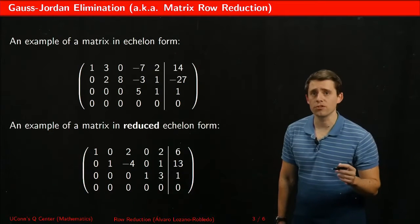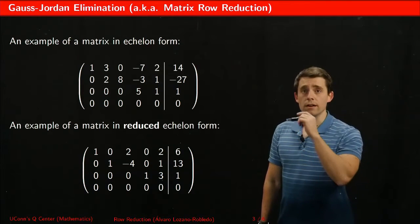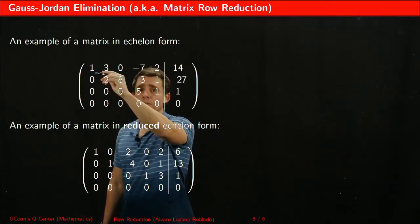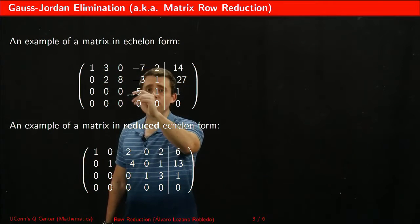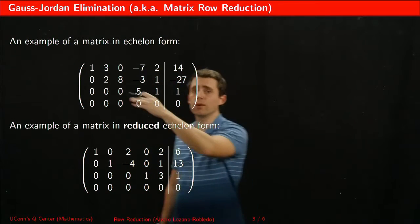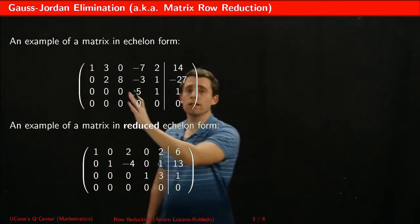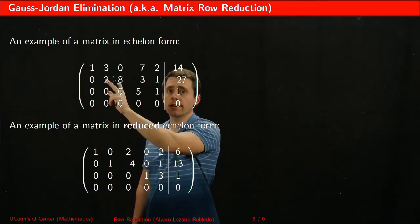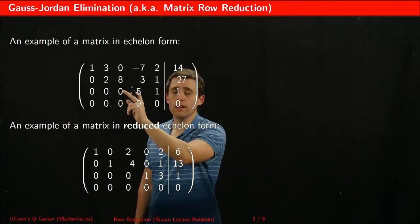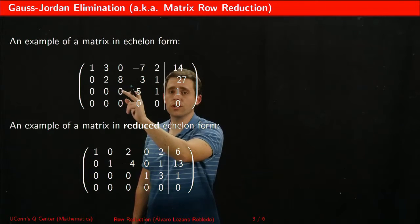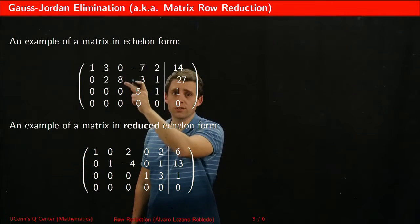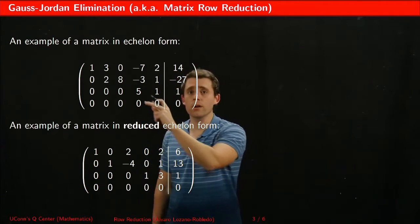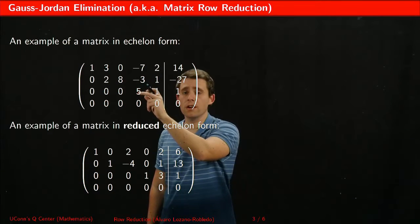Here are two examples of matrices in echelon form. Echelon form means there is a staircase pattern, with zeros in the lower left corner. Once there is a non-zero entry, the rest below are zeros. The next non-zero entry also has zeros below it. A column where the pivot position is zero would correspond to a free variable, while the pivot appears in another row with zeros below it.